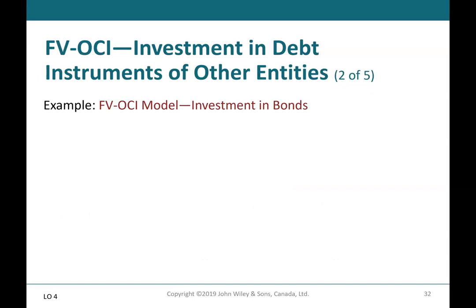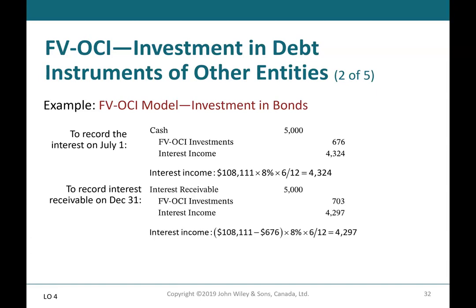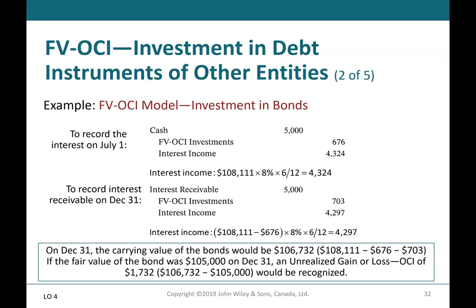FV-OCI — investment in debt instruments, Part 2 of 5. To record interest on July 1: debit cash $5,000; credit fair value through OCI investments $676; credit interest income $4,324. To record interest receivable on December 31: debit interest receivable $5,000; credit fair value through OCI investments $703; credit interest income $4,297. On December 31, the carrying value of the bonds is $106,732. If the fair value of the bond was $105,000 on December 31, an unrealized gain or loss through OCI of $1,732 would be recognized.